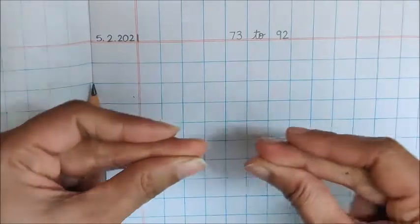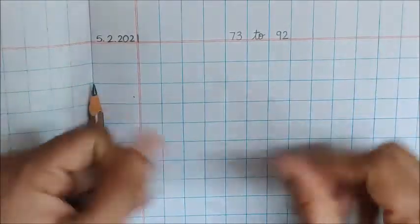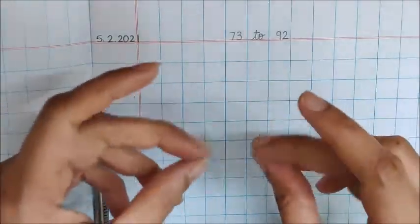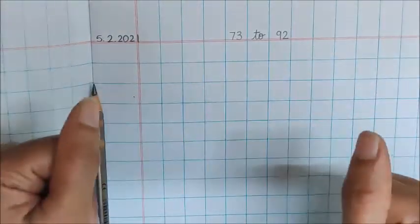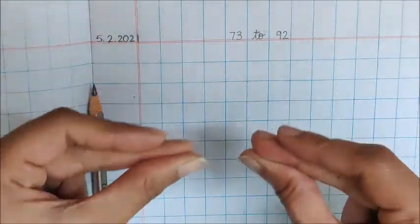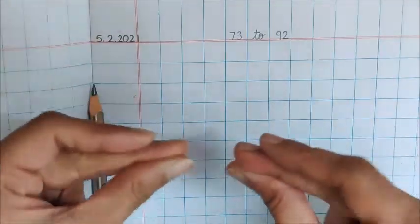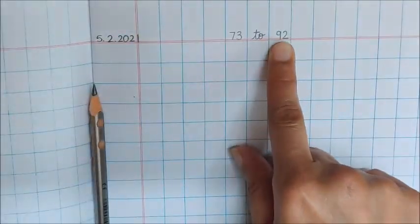73, 74, 75, 76, 77, 78, 79, 80, 81, 82, 83, 84, 85, 86, 87, 88, 89, 90, 91, 92, stop. Stop at number 92.